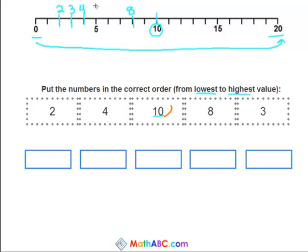So let's write them out. So the lowest number we have is 2. Then it's 3, 4, the 8, and lastly is the 10. So as you can see, we have now written them out from lowest to highest in value.